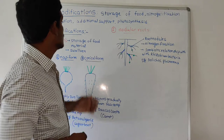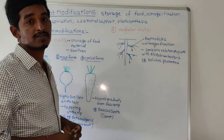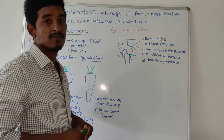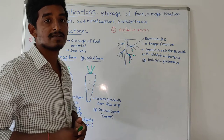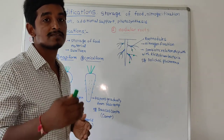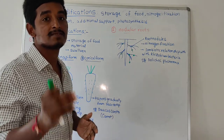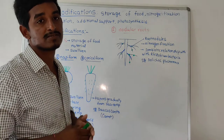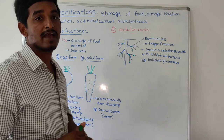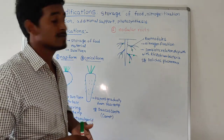Today we are going to discuss about a new topic: root modification. In the last lecture we discussed about various regions in root. Along with that we are already discussing about root functions — the normal functions of root. It helps in absorption of water and minerals from the soil, and it helps in synthesis of some plant growth regulators like cytokinins.